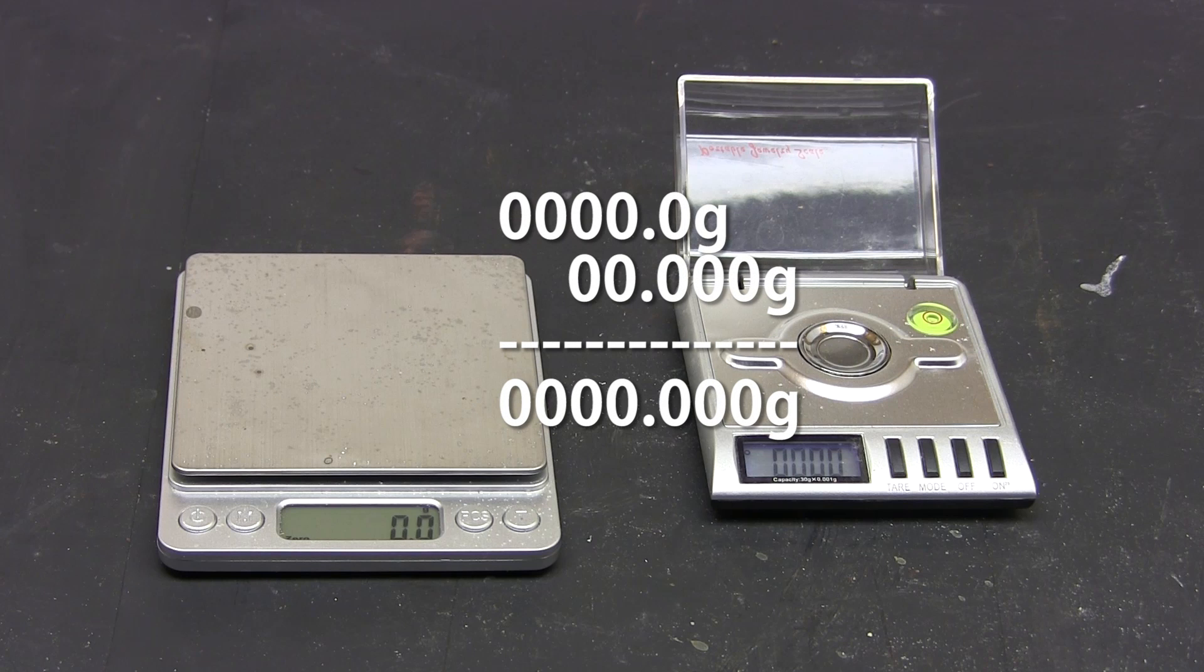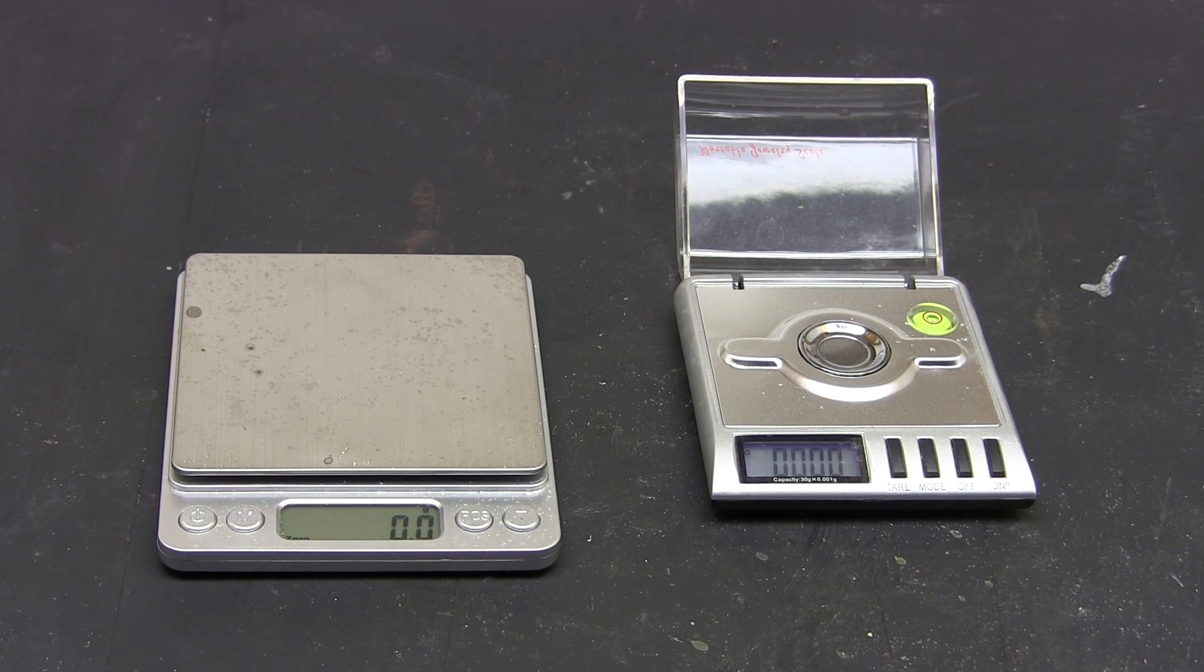Instead by using two different scales that have different ranges you can cover most of the measurements you'll need. Chances are if you're measuring a heavy amount of substance, the small changes are inconsequential. And if you're measuring a very small amount of substance you won't be loading the scale with the heavy container. So using two different scales can be very effective and cheap.